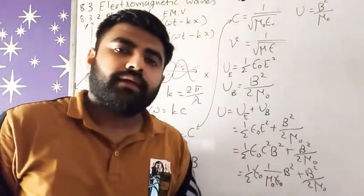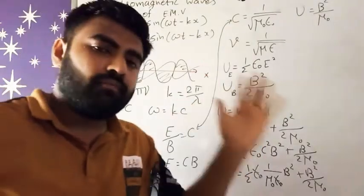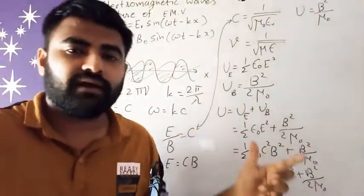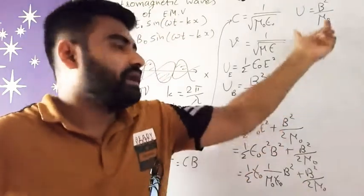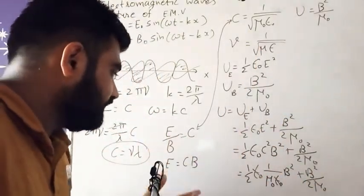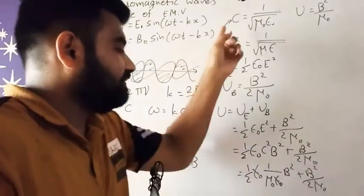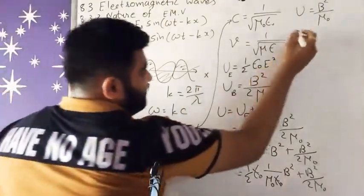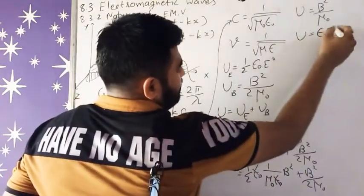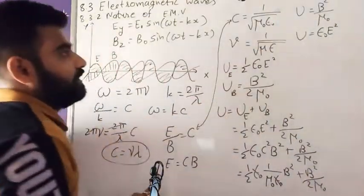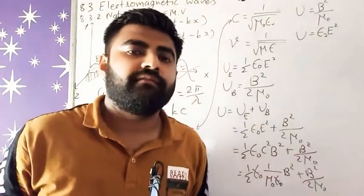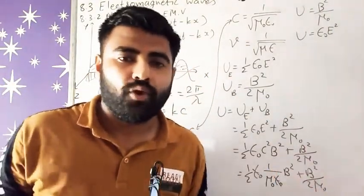To jab kabhi bhi dono energy same hongi, dono hi magnetic ke karan jo energy mili rahi, agar wahi energy hogi, so we get this formula. Similarly, agar cheez ulti kar dein, B ko subject bana ho, phir us under rakhon, so we also get here double, that is 2 × ½ε₀E², which equals ε₀E². So this is how we can find total energy in the electromagnetic waves.